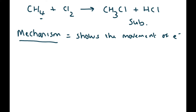Before we do the mechanism, we need a little bit more information. If you have a covalent bond inside a chlorine molecule, that line represents a covalent bond — a shared pair of electrons. One chlorine has put one electron in, and the other chlorine has put another electron in.